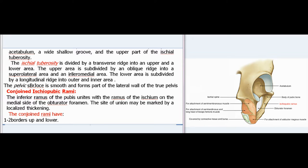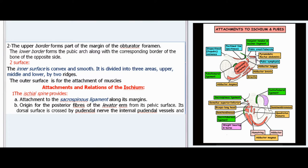The conjoined rami have two borders—upper and lower. The upper border forms part of the margin of the obturator foramen. The lower border forms the pubic arch along with the corresponding border of the opposite side. The inner surface is convex and smooth, divided into three areas by two ridges. The outer surface is for the attachment of muscles. Attachments and relations of the ischium: The ischial spine provides attachment to the sacrospinous ligament along its margins and gives origin to the posterior fibers of the levator ani from its pelvic surface. Its dorsal surface is crossed by the pudendal nerve, the internal pudendal vessels, and by the nerve to the obturator internus.